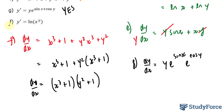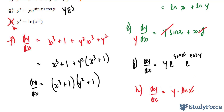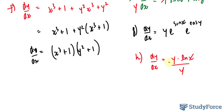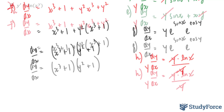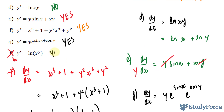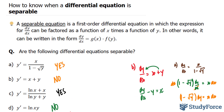Finally, in our last question (h), we have dy over dx. Using the rules of logs, I'll write the argument as a product: y times ln x. Dividing both sides by y and then multiplying both sides by dx suggests that this equation is also separable. And there you have it — that is how to tell when a differential equation is separable.